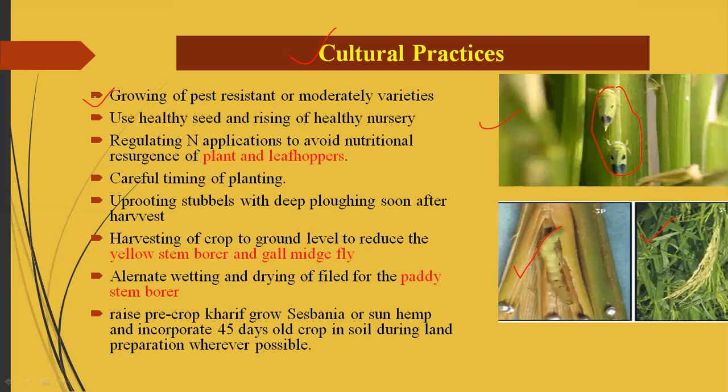The second cultural practice is to use healthy seedlings and healthy seeds for nursery preparation, which results in healthy, more resistant plants at transplanting. The third practice is regulating nitrogenous fertilizer application to avoid nutritional resurgence of plant hoppers and leaf hoppers, as pest incidence increases with excessive nitrogen application. Proper timing of planting must also be fixed carefully.